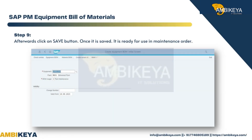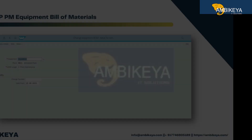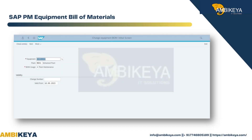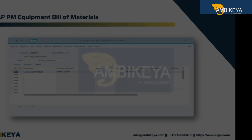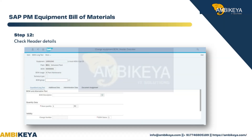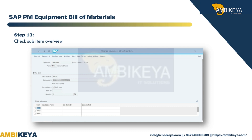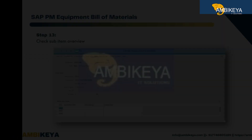Step 9 — Click the Save button. Once it is saved, it is ready for use in the maintenance order. Step 10 — Use IB02 to change the equipment BOM. Step 12 — Check header details. Step 13 — Check the sub-item overview.